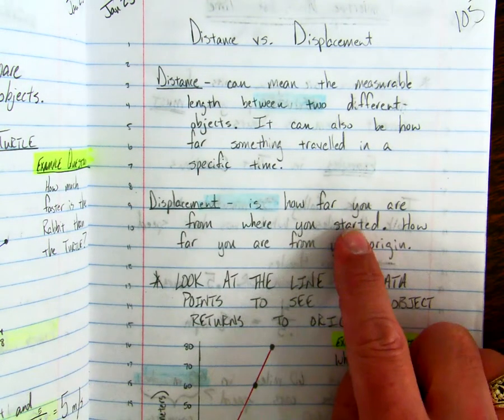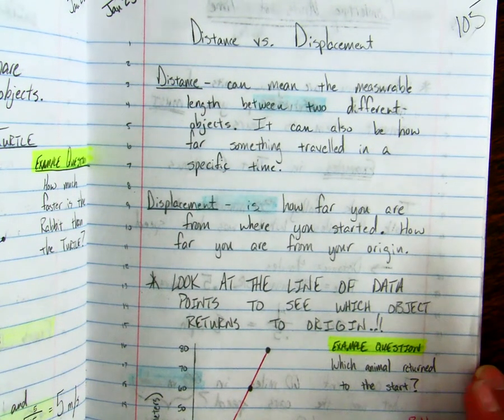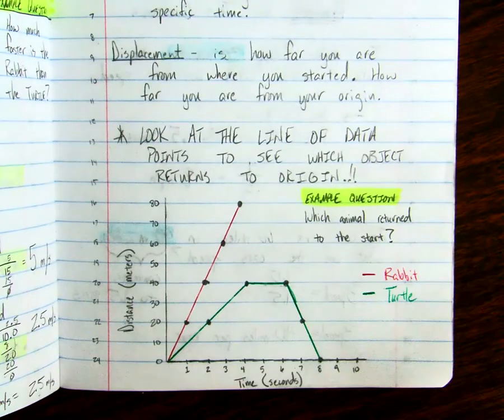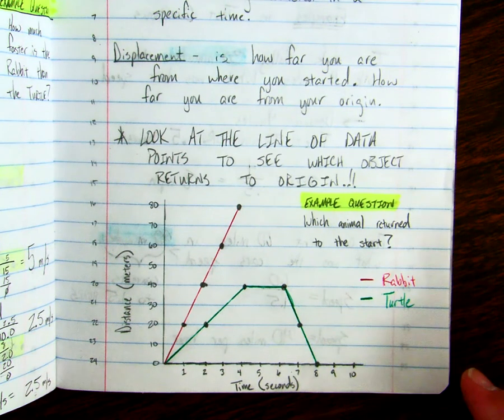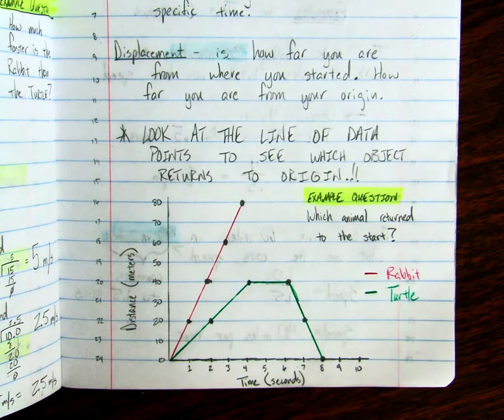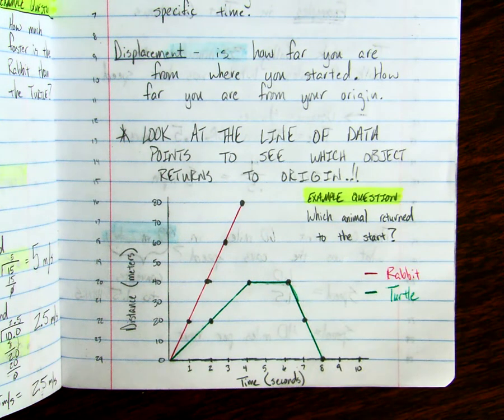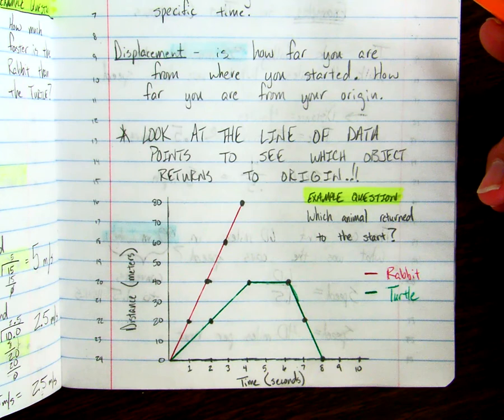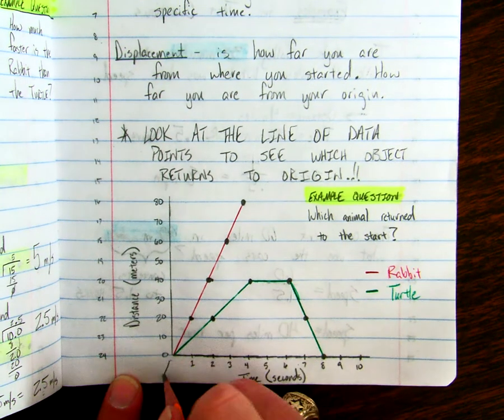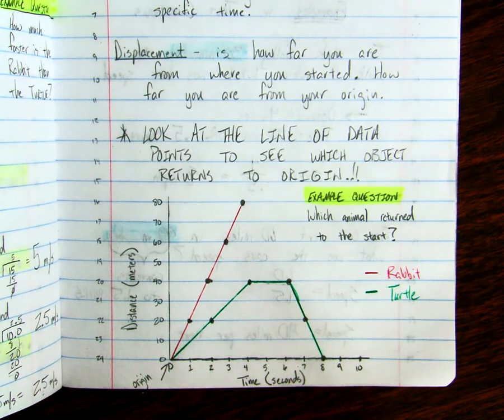So displacement is how far you are from where you started or how far you are from your origin. Again, those definitions can vary based on where you get them from. But what we want to make sure that we're clear of, regardless of where you get your definition for distance or displacement, is that you understand what those mean in terms of a science question in sixth grade. So, for instance, here I've drawn up a distance-time graph. So on the left-hand side we have meters, which is our y-axis. Down here on our x-axis we have time in seconds. So I just did a rabbit and a turtle again for comparison's sake. Now, the most important piece of a distance displacement graph is probably this corner right here. And you guys know from math that this is called your origin. This is where it's 0-0. That would be where the x-axis value is 0 and our y-axis value is 0. So that's our origin.